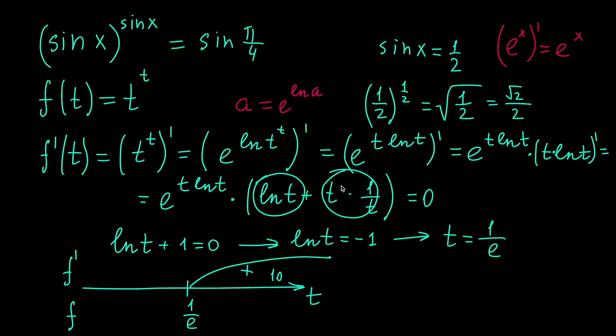We will have a natural logarithm of 10, which is positive plus 1, which is now even more positive. The exponential function is always positive, so the whole derivative will be positive for t equals 10, as well as for any t from this interval.